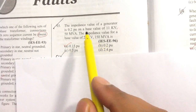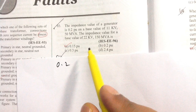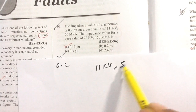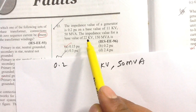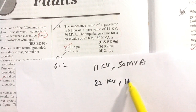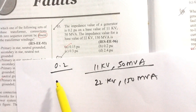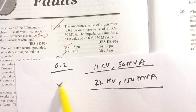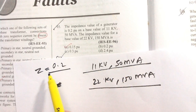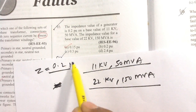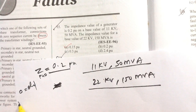Question number 3: the impedance value of a generator is 0.2 per unit on a base value of 11 kV, 50 MVA. Find the impedance value for a base value of 22 kV, 150 MVA. The impedance value on the previous base is 0.2 per unit — this is the old per unit impedance value.